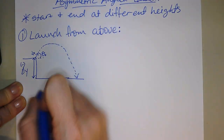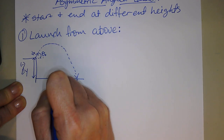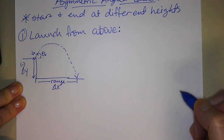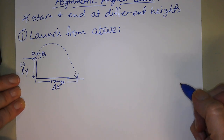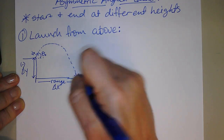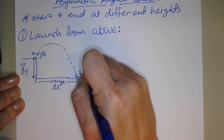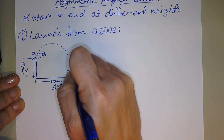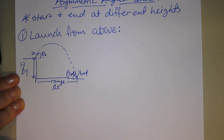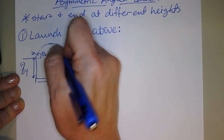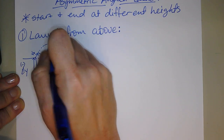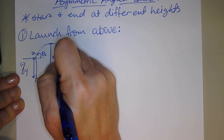Where you end up from where you start is your range, which we identify as delta X, your horizontal displacement. When you land, you're going to land with your impact velocity at some angle of impact. These go up before they go down, so they will reach a maximum height — how high this is off the ground is your max height.